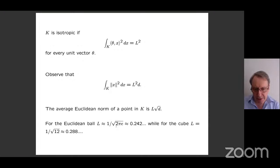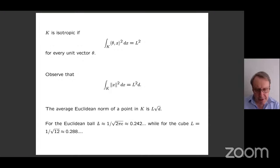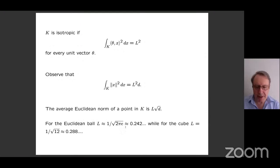We should think of L as roughly a constant. In the case of the Euclidean ball, asymptotically as D goes to infinity, L is about 0.24. For the cube in each dimension, L is exactly 1 over root 12. It's fairly obvious that the Euclidean ball is the set for which L is smallest — if you want to minimize the integral of the square of the Euclidean norm, you pack the volume as close to the origin as possible. How big L can be will be a subject taken up later.